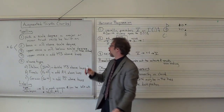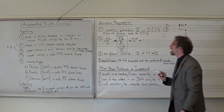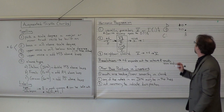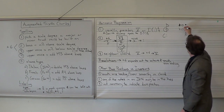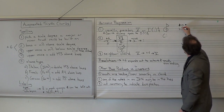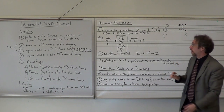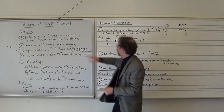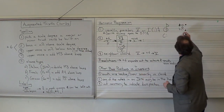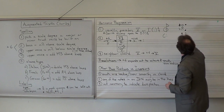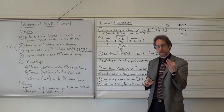Now step 4: in an upper voice, add a major third above the bass. A major third above A-flat would be a C. This is the core of your augmented sixth chords — those three notes: A-flat, C, and F-sharp.